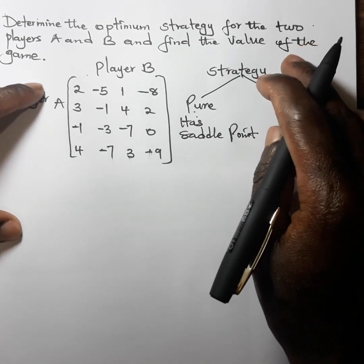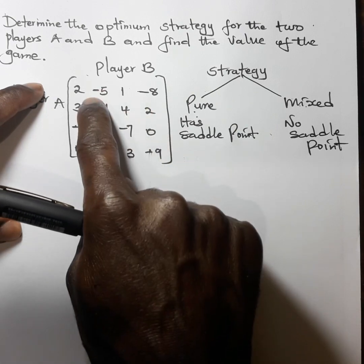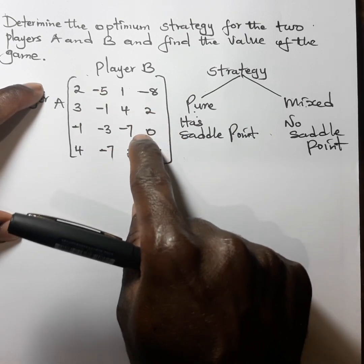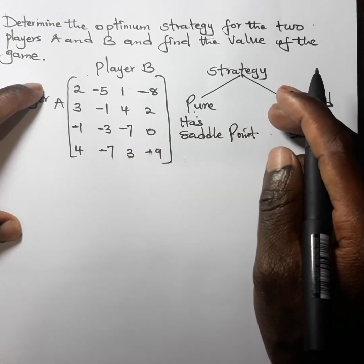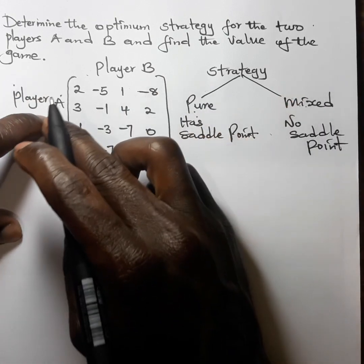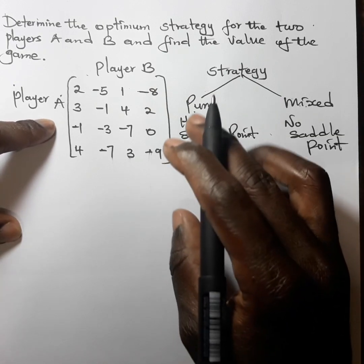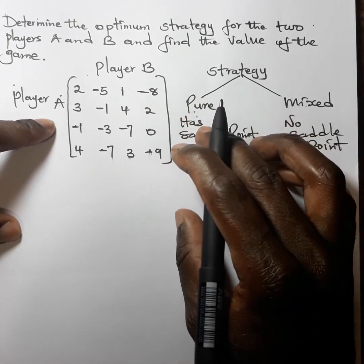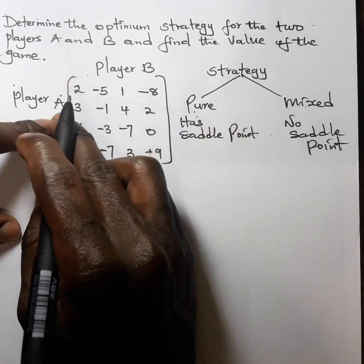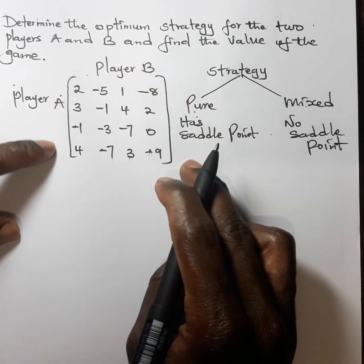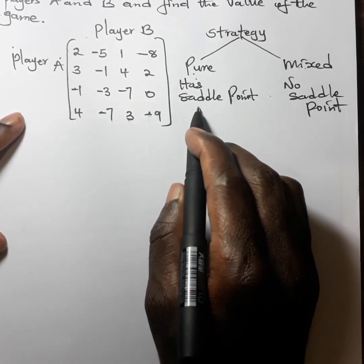The value of the game is the average of the payoffs that gives an optimum strategy for each player after playing for an extended period of time. For example, if the players choose to play for one hour, after that one hour we are supposed to get the average of the payoffs, which gives the optimum strategy for each player. Now let us proceed to determining the saddle point.